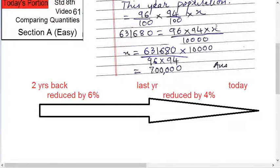Now we have to solve for X. Take everything to the other side: X equals 631,680 upon 96 into 94, into 10,000.